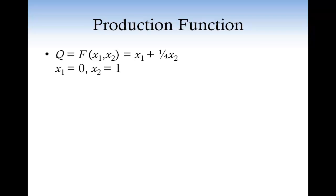Now, if the firm uses zero units of input 1 and one unit of input 2, then the maximum amount of output that the firm can produce is 0.25. Again, if the firm uses one unit of input 1 and one unit of input 2, the maximum amount of output that the firm can produce is 1.25, and so on. For all the combinations x1, x2, the maximum amount of output is given by the production function calculated at x1, x2.